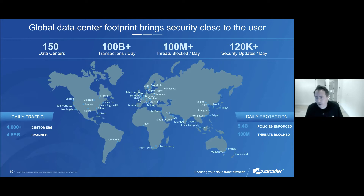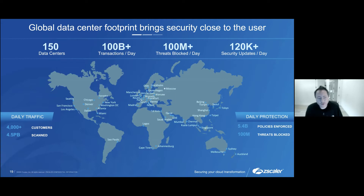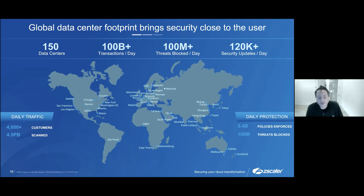We knew from the very beginning that to deliver a service like this in the cloud — in a way that you're not slowing users down and not introducing choke points or bottlenecks — you have to be massively distributed at the edge. No one can go faster than the speed of light. So that means we have to be as physically close to the end user as they go out to the internet. You don't want a user in London to have to backhaul back through San Francisco or even the East Coast.